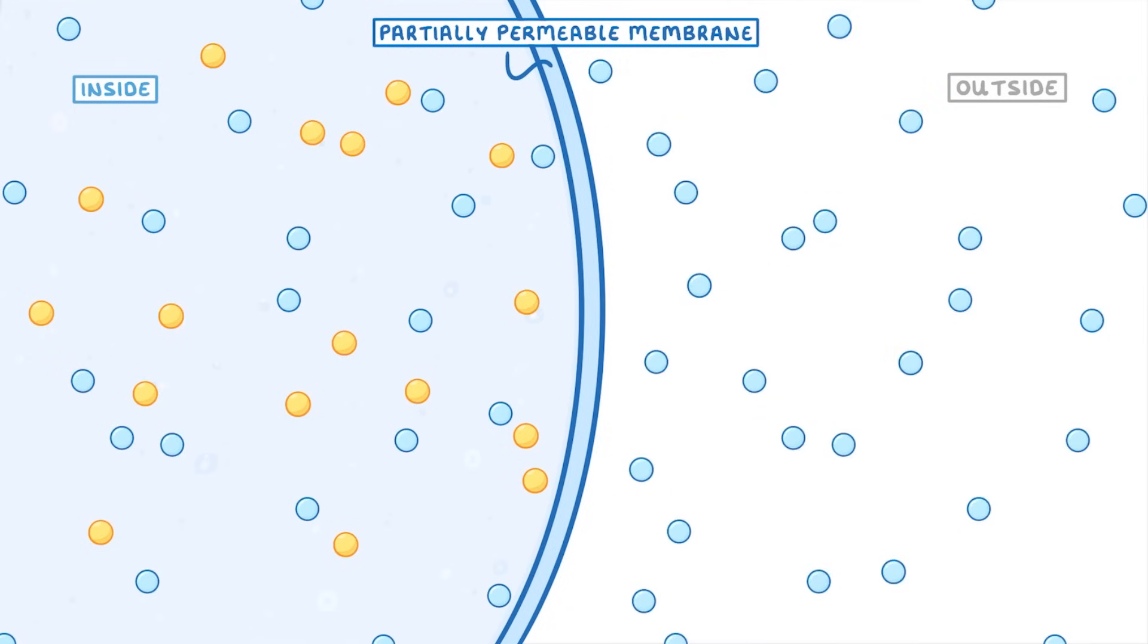The last thing we need to cover is how all of this applies to cells. So let's pretend that this is the inside of the cell, and this is the outside. And between them is the cell's partially permeable membrane. Inside our cell we have lots of water particles, and a fair few solute particles. And then outside we have almost pure water, with only a couple of solute particles.